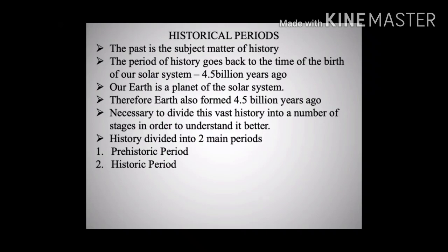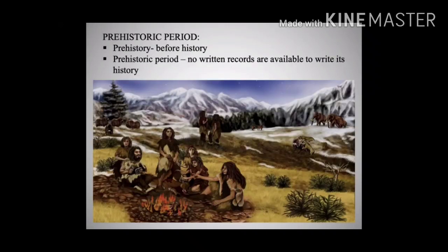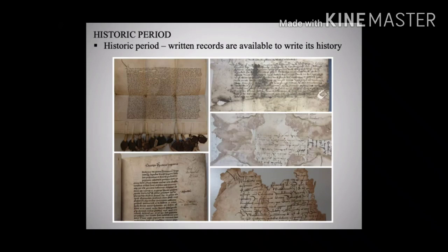Therefore, the time in history is divided into two main periods: the prehistoric period and the historic period. The prehistoric period means 'before history' — it is the period for which no written records are available. The historical period is the period for which written records are available and using which history can be written.